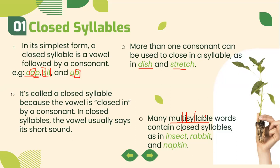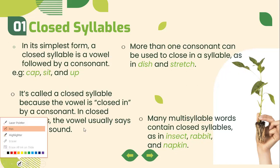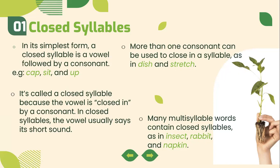Multi-syllable words contain closed syllables and may contain other types of syllables that we'll cover later. Examples of multi-syllable words with only closed syllables: 'insect' — divided into 'in' and 'sect', two closed syllables; 'rabbit' — 'rab' and 'bit', a double consonant in the middle; 'napkin' — 'nap' and 'kin', two consonant letters between the vowels.